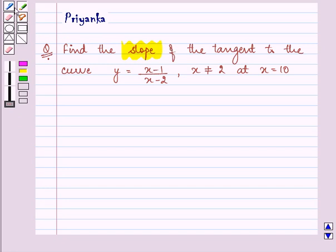It says find the slope of the tangent to the curve y is equal to x minus 1 upon x minus 2 where x is not equal to 2 at x is equal to 10.